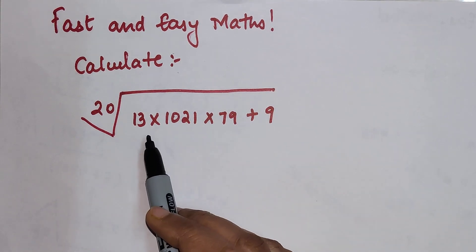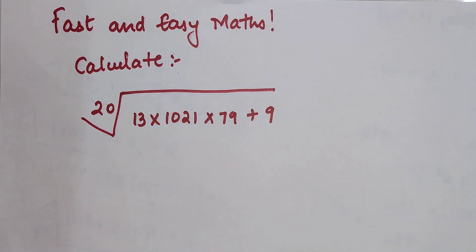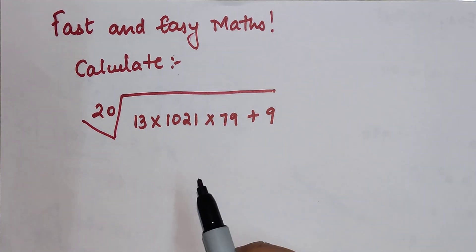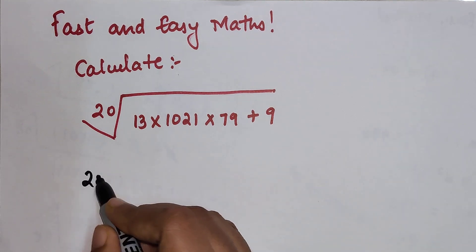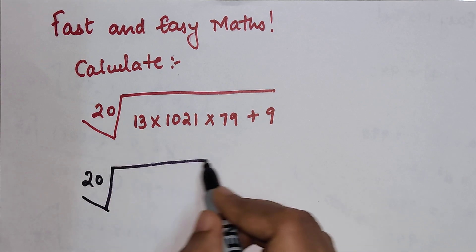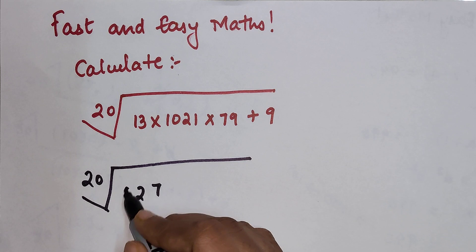Multiplying 13 and 1021 will be difficult because multiplying a 2-digit with a 4-digit will be a difficult job. So what we can do is multiply 13 and 79, and if you do that we will get the answer as 1027.